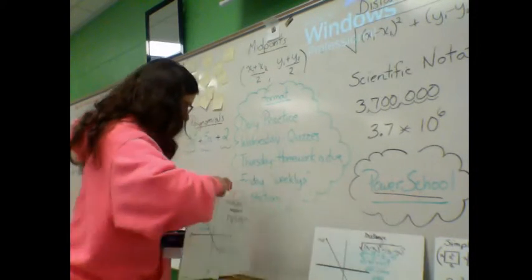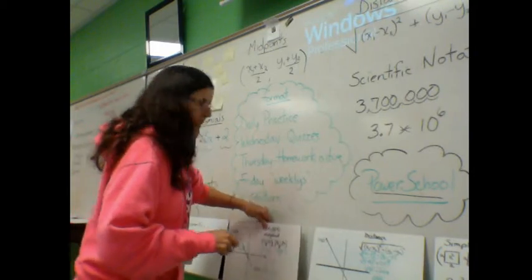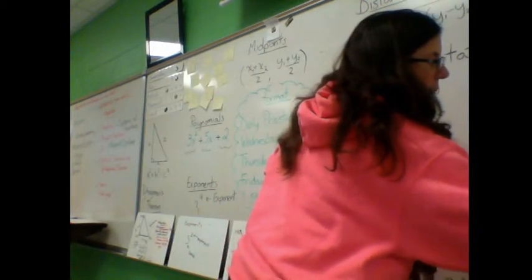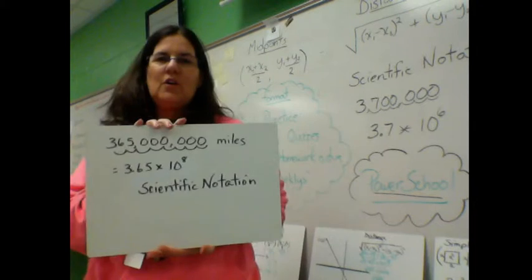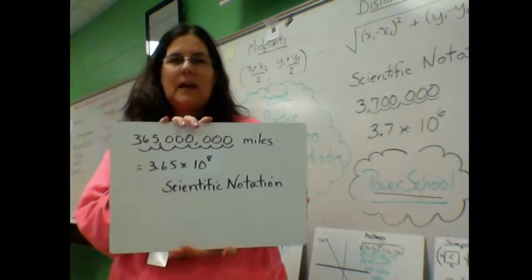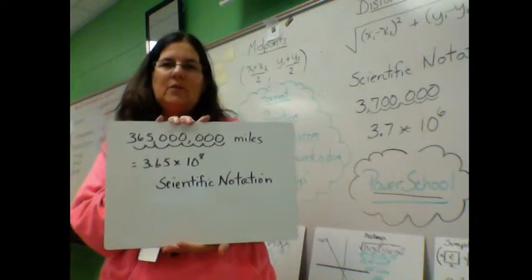Finally, this nine weeks, we're going to be working with scientific notation. I happened to look up the distance between the Earth and Jupiter, which happens to be in the sky right now. It's 365 million miles away.